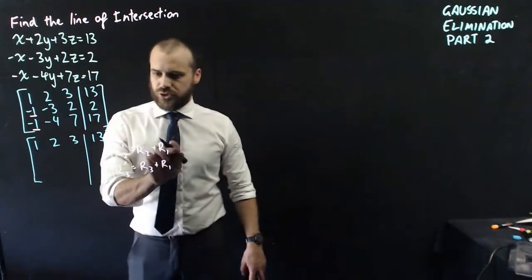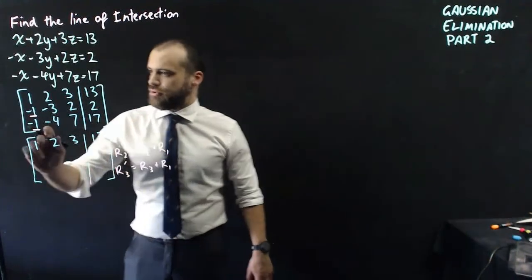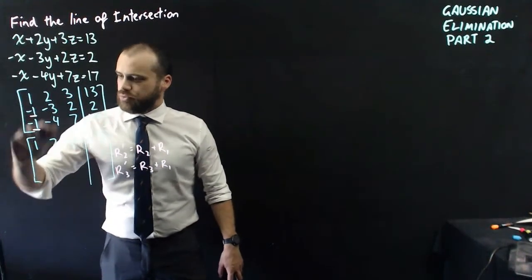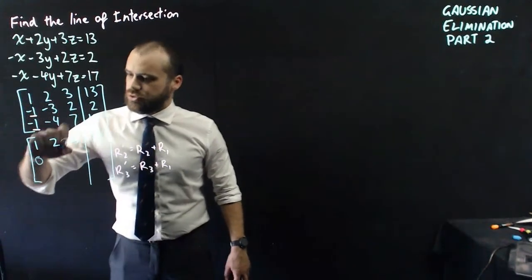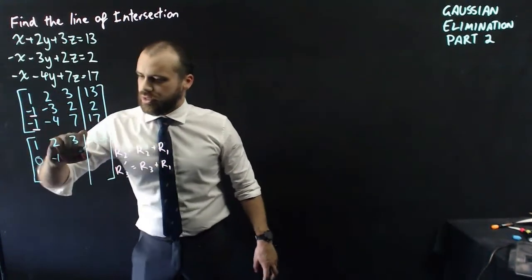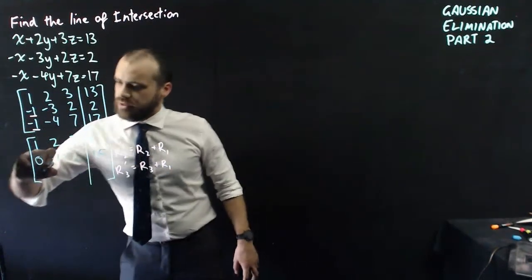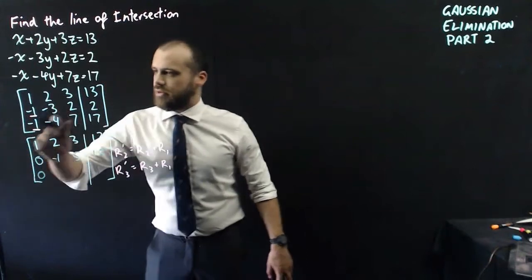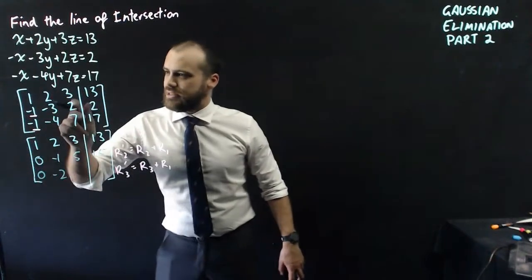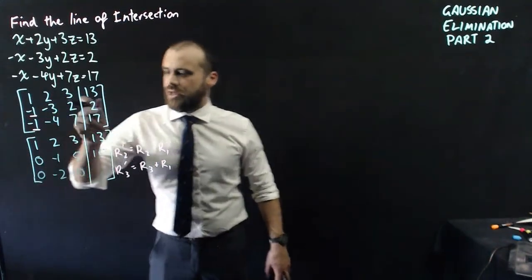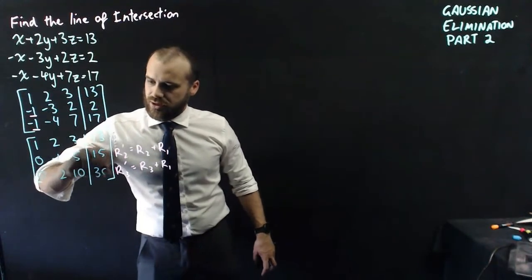So, I'm going to add row one to row two. Negative one plus one is zero. Negative three plus two is negative one. Two plus three is five. And two plus thirteen is fifteen. And negative one plus one is zero. Negative four plus two is negative two. Seven plus three is ten. And seventeen plus thirteen is thirty.